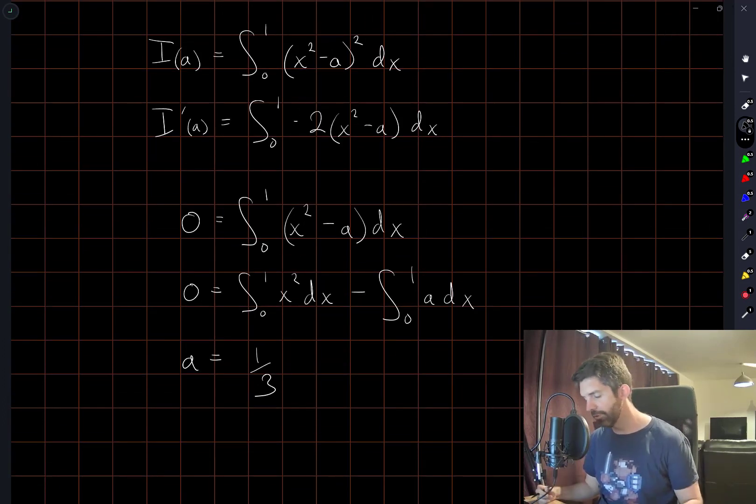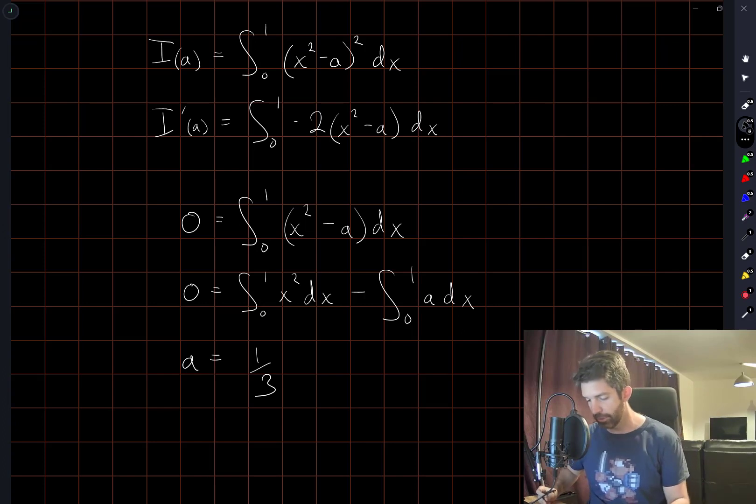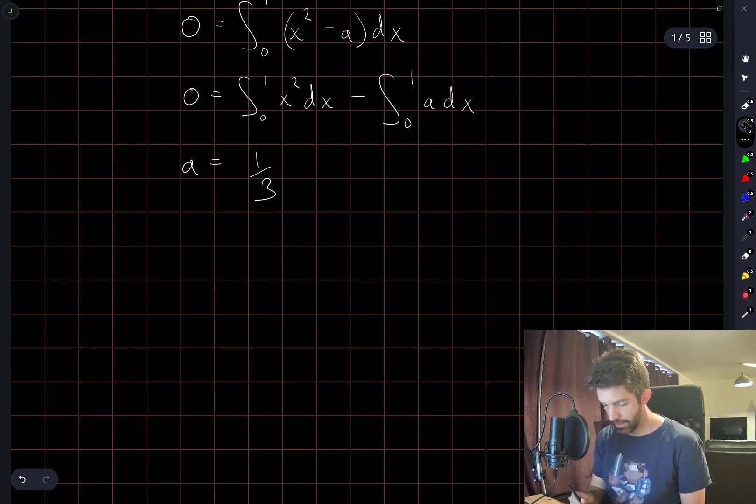I mean if we wanted to be really strict here and make sure that it's a minimizer we would do second derivatives or something like that but we're just going to proceed as given. So the minimum is going to occur at I(1/3).